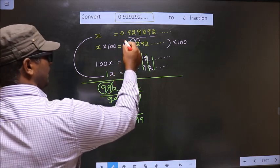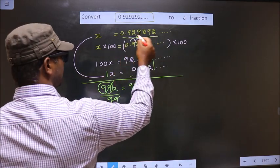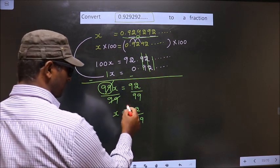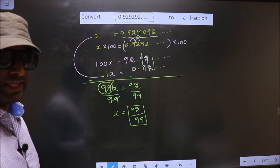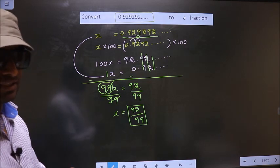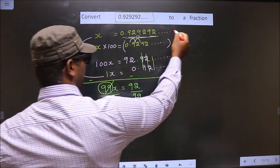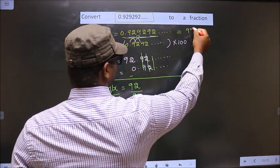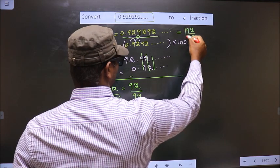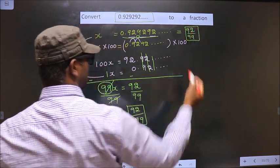Now, earlier we assumed the recurring decimal to be x. Now we got the fraction equal to x. That implies only one thing. That is, the recurring decimal equals the fraction. That is, 92 by 99. So this is our answer.